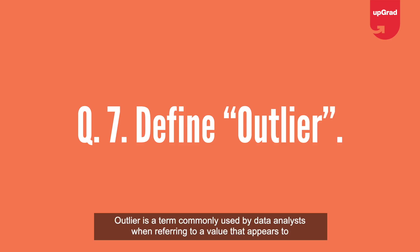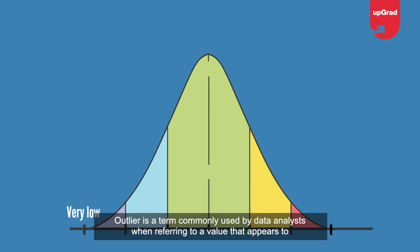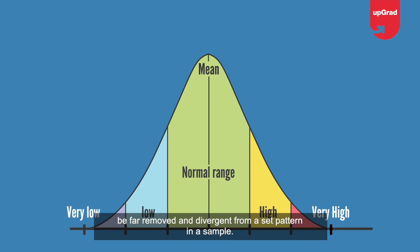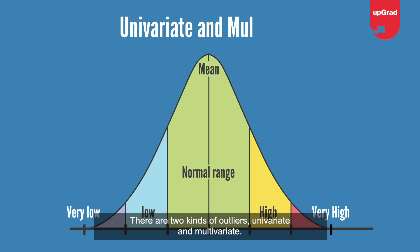Define outlier. An outlier is a term commonly used by data analysts when referring to a value that appears to be far removed and divergent from a set pattern in a sample. There are two kinds of outliers: univariate and multivariate.